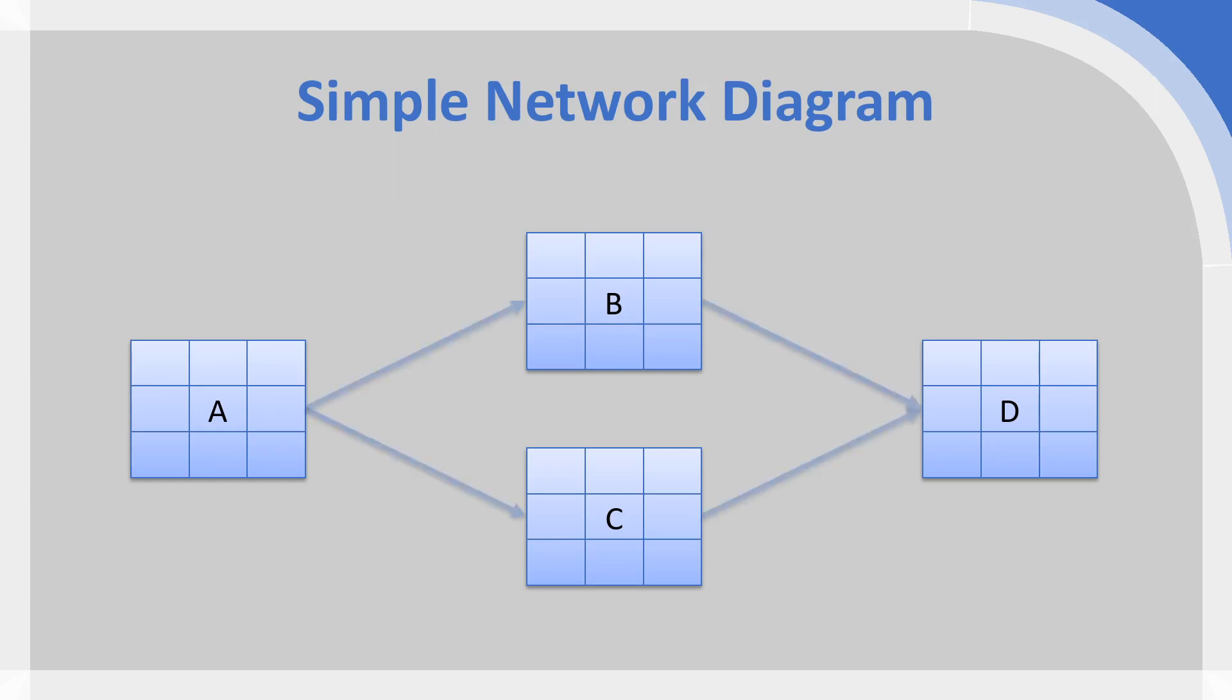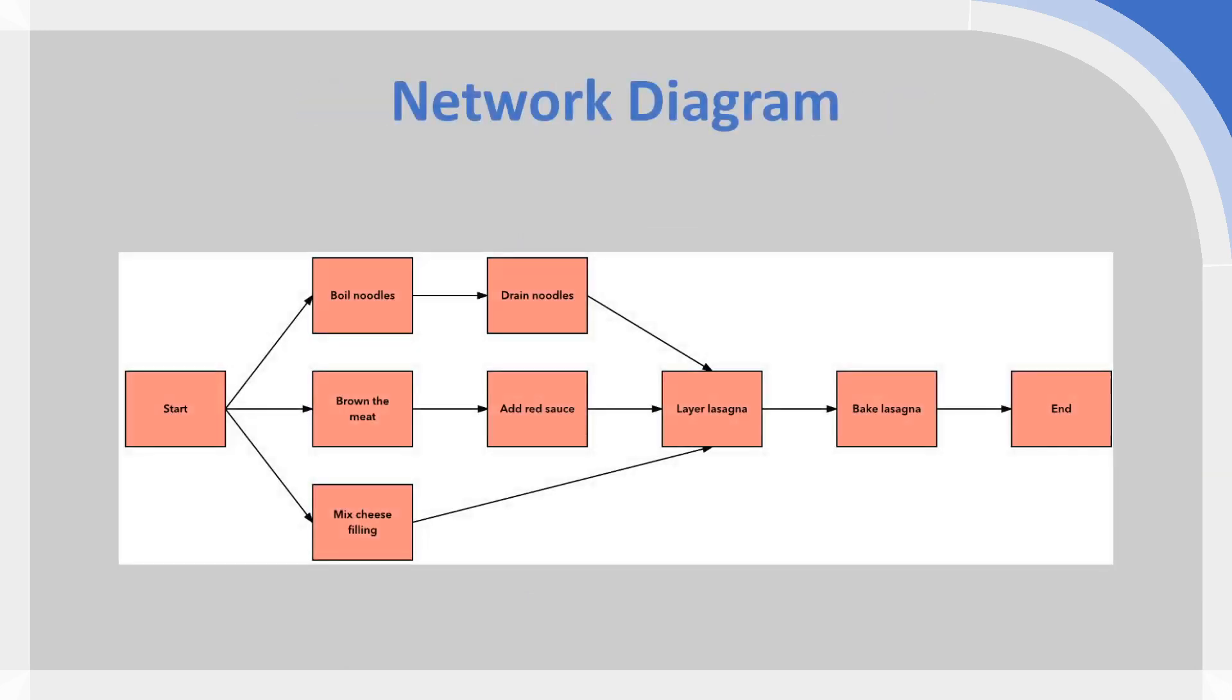So if we add arrows to this, which a network diagram needs to show the direction and the relationship between different activities, we have a nice simple network diagram that looks like this: B and C following A, and then D following B and C. So this is a very simple network diagram, but if we look at some other examples, we can see how useful it can really be.